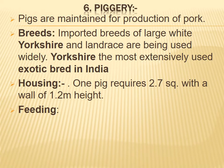Sixth, pigs are maintained for production of pork. Imported breeds of Large White Yorkshire and Landrace are widely used. Yorkshire is the most extensively used exotic breed in India. Housing: one pig requires 2.7 square meters with a wall height of 1.2 meters.